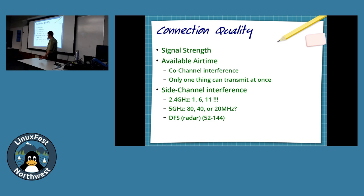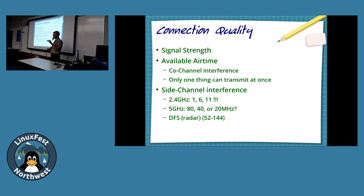Besides your signal strength — is signal strength a good indication of how fast you can go? Not necessarily. Is it possible to have too much signal? Yes. Your radio will actually clip the incoming signal if it's too hot, and that's not decodable information. If you put your access point right next to your laptop, you might be negotiating a much lower rate just to contend with a hot signal.